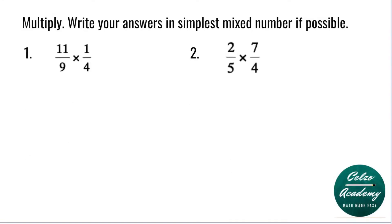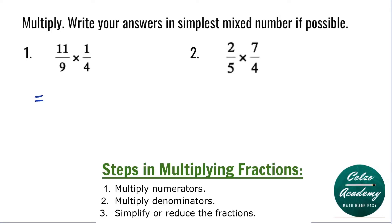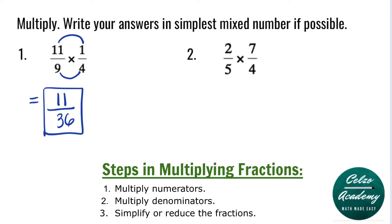Question number 1: 11 over 9 times 1 over 4. Step 1, multiply the numerators 11 and 1, and that is 11. Over — multiply denominators 9 and 4, and that is 36. In this fraction, 11 over 36, there is no number that can divide both 11 and 36, so this is the simplest answer.